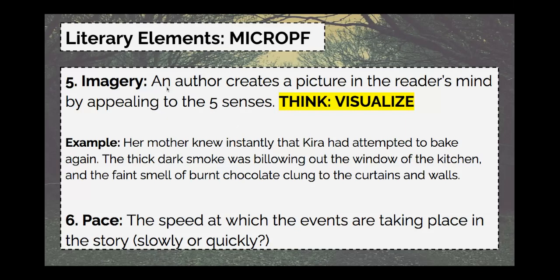Number five is imagery. This is when an author creates a picture in the reader's mind by appealing to the five senses — this definition should sound familiar. When we discussed reading strategies at the beginning of the year, one strategy we focused on was visualize, where you find descriptive detail throughout the text. Visualize and imagery are the same thing. Any example you would label as visualize is now imagery. The word imagery has image in it — anything helping create that picture in your mind. Our five senses are sight, sound, smell, taste, and touch.